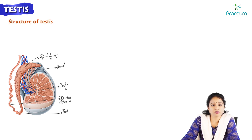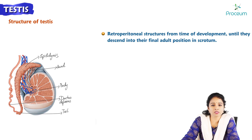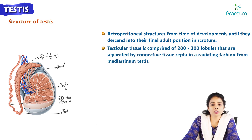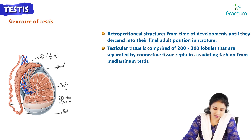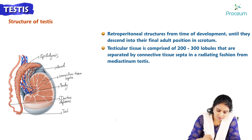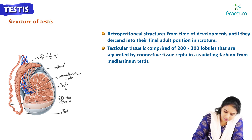The testis are retroperitoneal structures from the time of development until they descend into their final adult position in the scrotum. The testicular tissue is comprised of 200 to 300 lobules that are separated by connective tissue septa, radiating in a fashion from the mediastinum testis. The medial testis is the mediastinum testis.